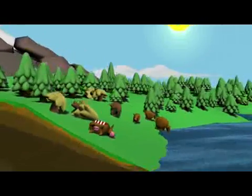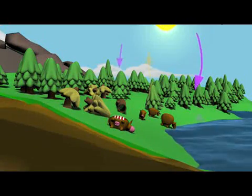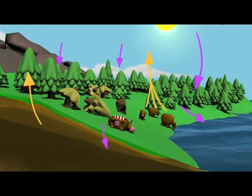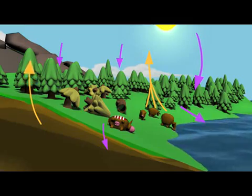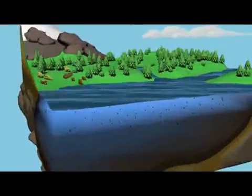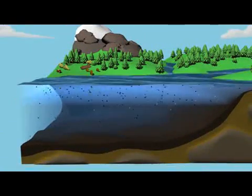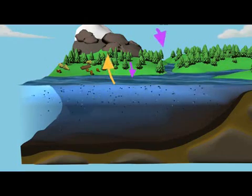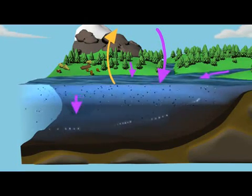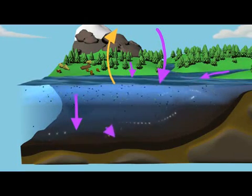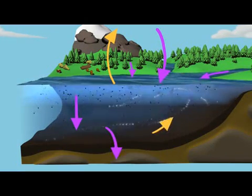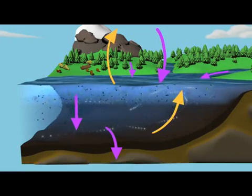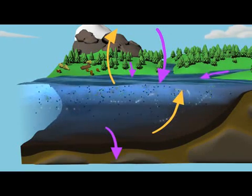Moving offshore, the ocean takes up carbon through physical and biological processes. At the ocean surface, carbon dioxide from the atmosphere dissolves into water. Tiny marine plants called phytoplankton use this carbon dioxide for photosynthesis. Phytoplankton are the basis of a marine food web. After animals eat plants, they breathe out carbon or pass it up the food chain.